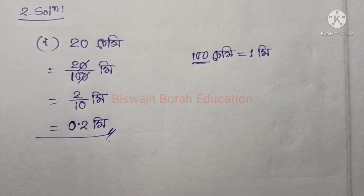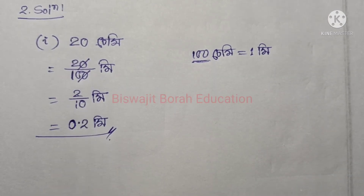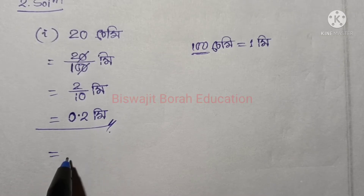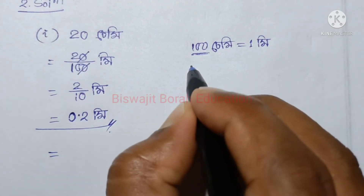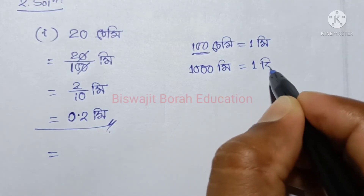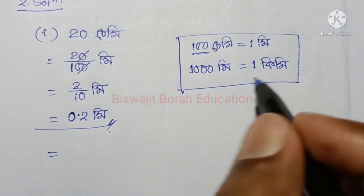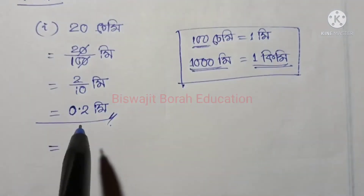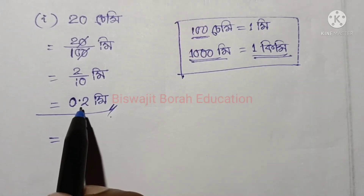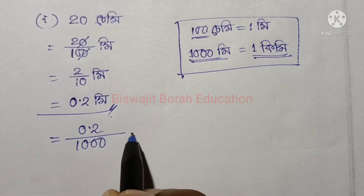Now if we convert to kilometers: 1 kilometer equals 1,000 meters. So we use this relationship to convert meters into kilometers.